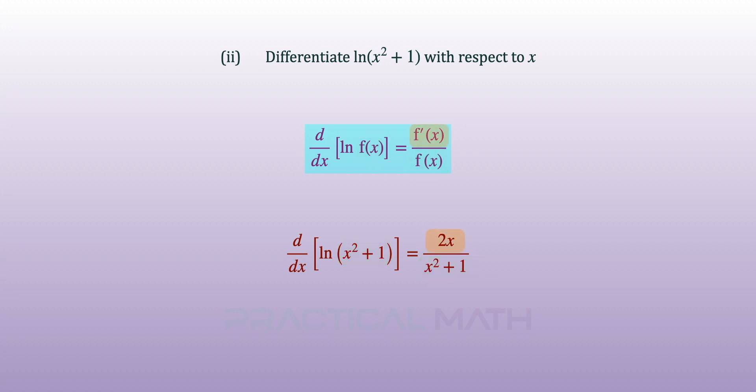Next, differentiating f of x will give us f prime of x and so, differentiating x squared plus 1 will produce 2x and we write it in the numerator. And so, we have this answer of 2x divided by x squared plus 1.